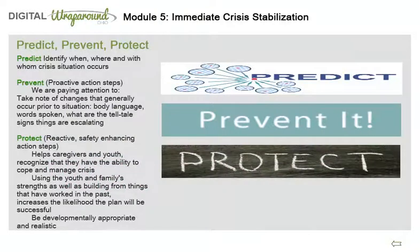PREDICT: We are identifying when, where, and with whom a crisis situation occurs. PREVENT: We are paying attention to and taking note of changes that generally occur prior to the situation — body language, words spoken, and the tell-tale signs things are escalating. PROTECT: Helps caregivers and youth recognize that they have the ability to cope and manage crises. Using the youth and family strengths, as well as building from things that have worked in the past, increases the likelihood the plan will be successful. Be developmentally appropriate and realistic.